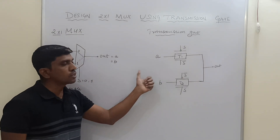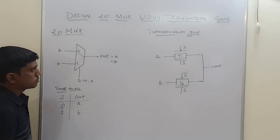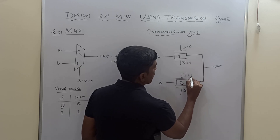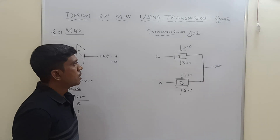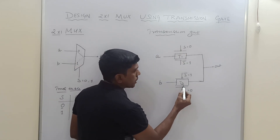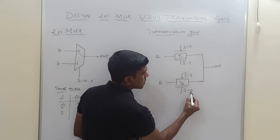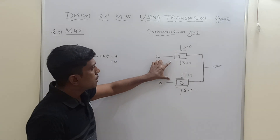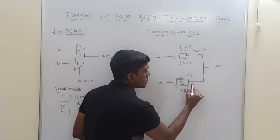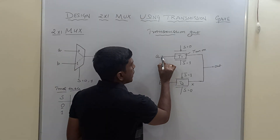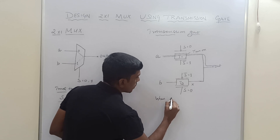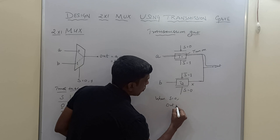Now I will verify the response of the circuit. When S equals 0, S-bar equals 1. For T1: the PMOS transistor gate receives 0 and the NMOS transistor gate receives 1 — so T1 is turned on. For T2: the PMOS gate receives 1 and the NMOS gate receives 0 — so T2 is turned off. Therefore, the A value is transmitted to the output through T1, confirming that when S equals 0, output equals A.